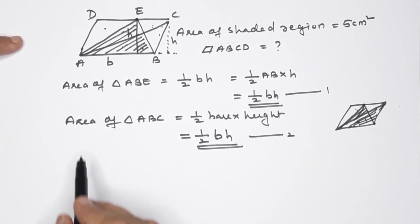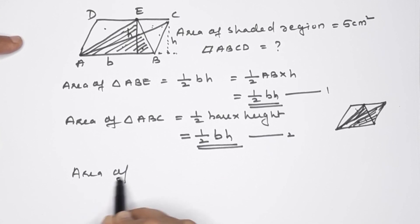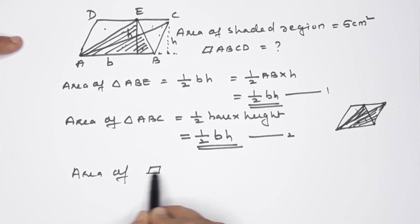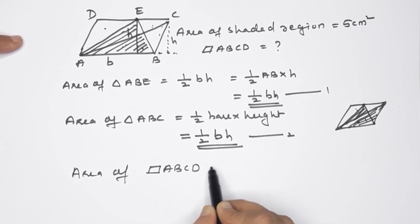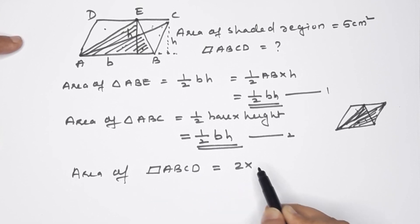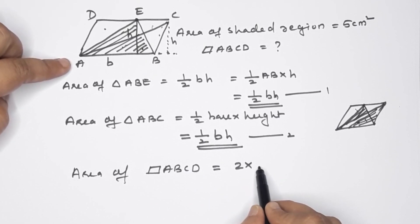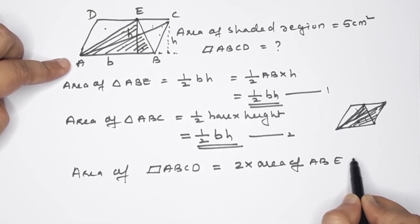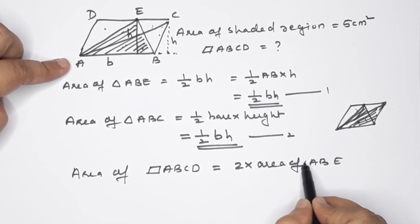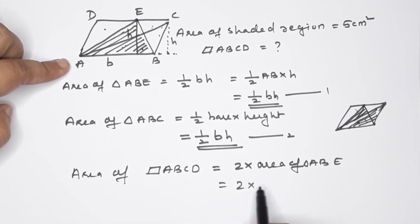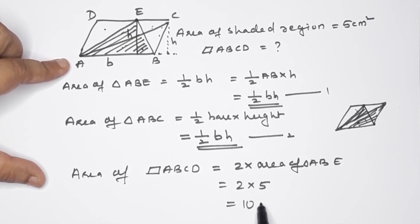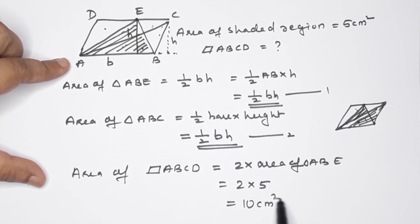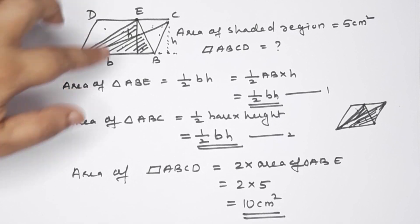We are looking at the parallelogram area. Area of parallelogram ABCD is equal to 2 into area of triangle ABE. The triangle ABE area is 5, so 2 into 5 equals 10 square centimeters. That means the parallelogram area is double the triangle area.